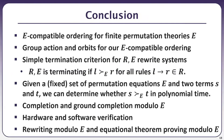In conclusion, we established an E-compatible ordering for finite permutation equation theories E. Our essential idea is to use group actions and orbits to establish the E-compatible ordering. It provides a simple termination criterion for R/E rewrite systems: if L > R for all rules L → R, then R/E is terminating. Given a set of permutation equations and two terms S and T, we can determine whether S > T in polynomial time. Completion modulo E can be easily adapted from existing literature, and we provide inference rules for ground completion modulo E. Potential applications include hardware and software verification, and our ordering can be used for rewriting modulo E and equational theorem proving modulo E.